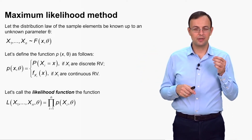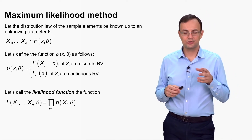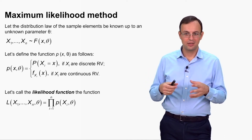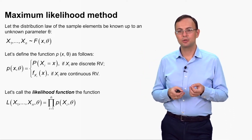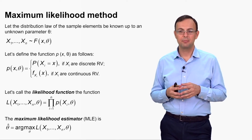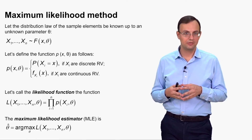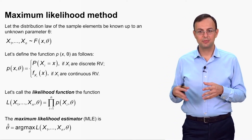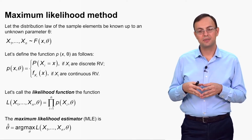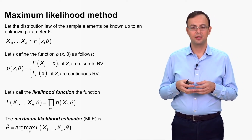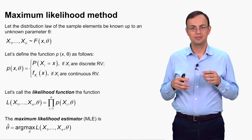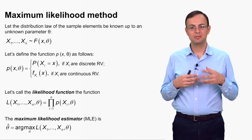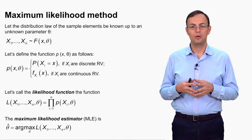After defining the function p, we define the likelihood function, which depends on the sample and the unknown parameter theta, and equals the product of all p(x_i, theta) for i from 1 to n — that is, p(x1,θ) · p(x2,θ) · … · p(xn,θ). The maximum likelihood estimator (MLE) is then defined as the value of theta that maximizes the likelihood function — the argmax of L over theta.